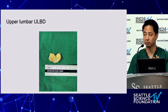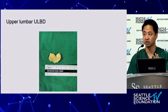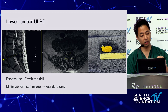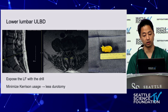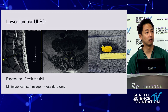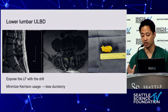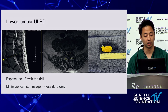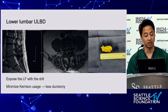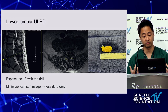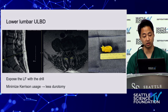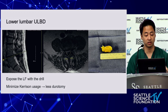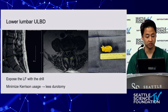This is upper lumbar ULBD, so you can expect more of a butterfly V-shape. Whereas in lower lumbar, the flavectomy takes the form of a more horizontal butterfly shape. If you do flavectomy this way, you can minimize Kerrison usage, which leads to less durotomy and increased efficiency.